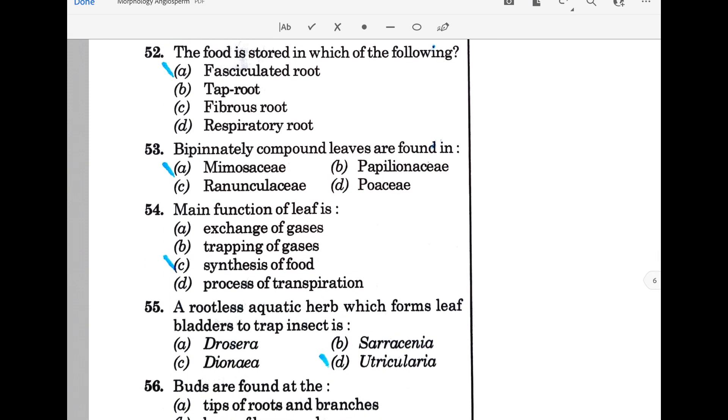Sundew, Dionaea, and pitcher plants are insectivorous plants. Food is stored in fasciculated roots. Bipinnately compound leaves are found in Mimosa. Main function of a leaf is synthesis of food. The main function of leaf is synthesis of food, and others are auxiliary functions. If there is an option of all of the above, then I will go for all of the above.